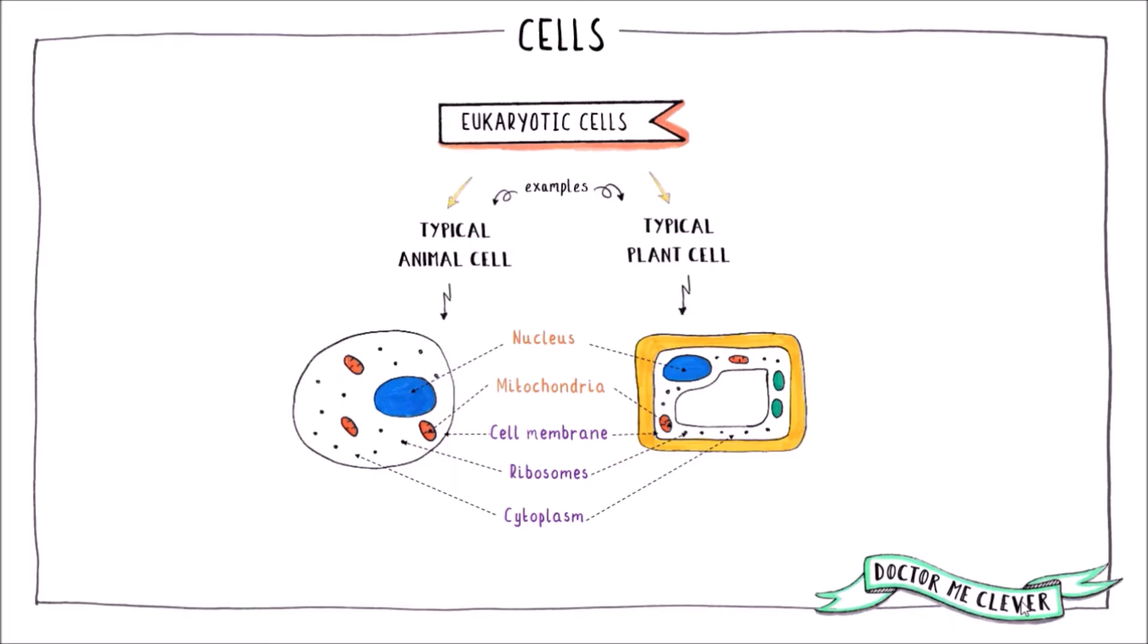The three subcellular structures that are unique to plant cells, and not found in animal cells, are the large permanent vacuole, which contains cell sap. This is a weak solution of salt and sugars.